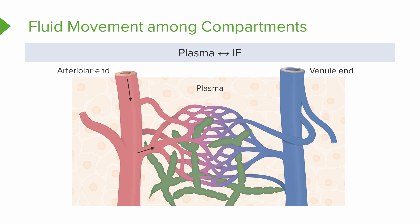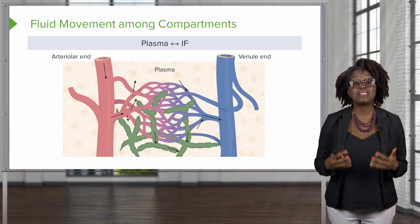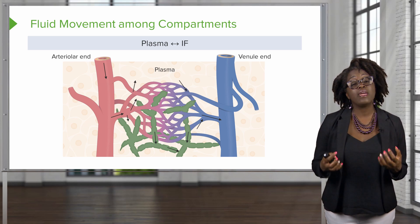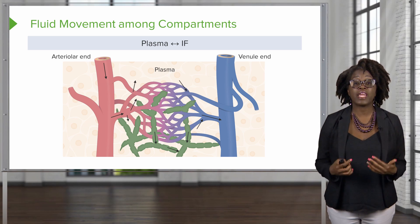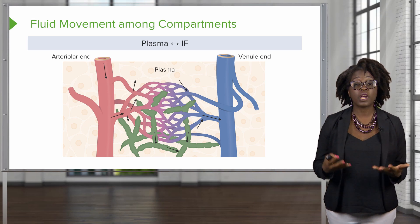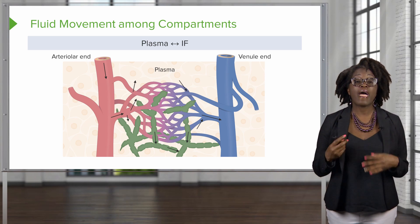If we look at movement among compartments, we find that plasma moves in and out of our interstitial fluid. This exchange occurs across our capillary walls. Fluid leaks from the arteriolar end of our blood capillaries and is reabsorbed at the venule end. Any fluid not reabsorbed by the venule is then picked up by the lymphatic vessels, which eventually return this fluid to the blood after filtering it.